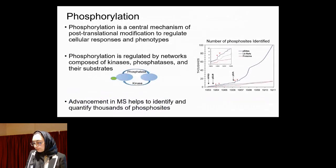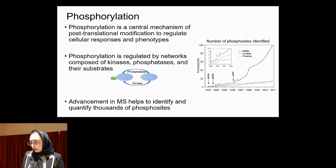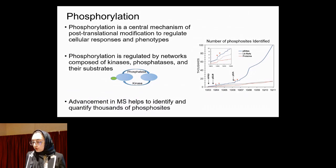Phosphorylation is one of the main post-translational modifications which has a really central role in cellular signaling. Phosphorylation is composed of a network of kinases that attach the phosphate compound to the protein, phosphatases that remove the phosphate compound from the protein, and the substrates which are the target proteins.